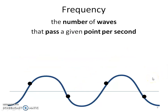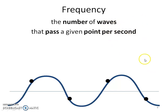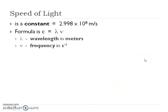What is frequency? Frequency is the number of waves that pass through a given point per second — it's really the 'per second' that gives us the units for frequency. The speed of light is a constant which will be given to you. The formula is C, which is the speed of light, equals wavelength times frequency — lambda times nu.